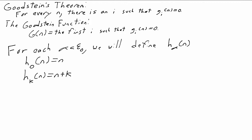And more generally, h_k of n, where k is a natural number, will be just n plus k. More generally, we'll think of h_alpha as representing the operation of adding 1 alpha times, but we'll have to figure out what it means to add 1 an ordinal number of times.